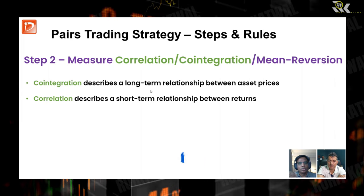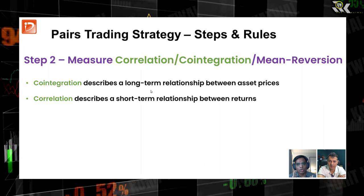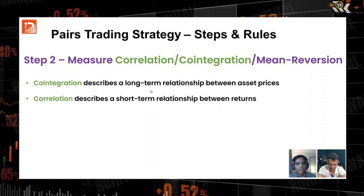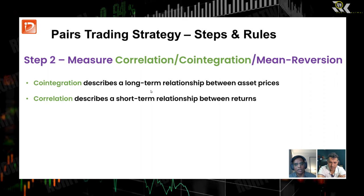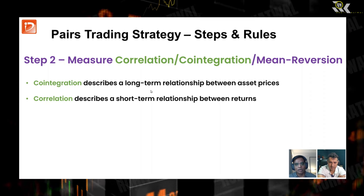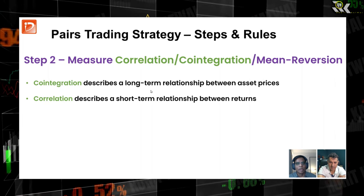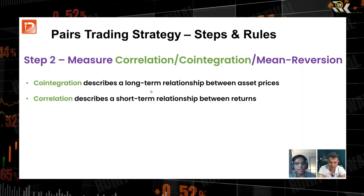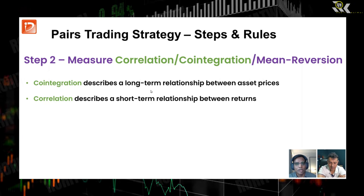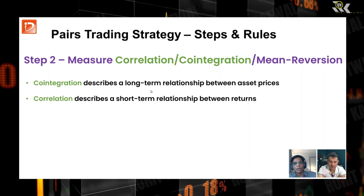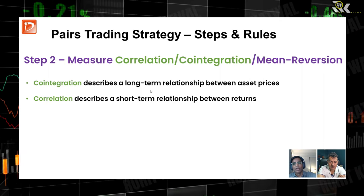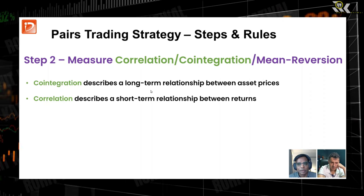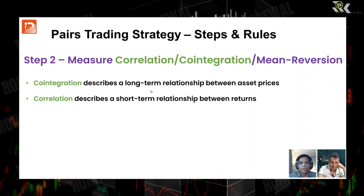In simplest terms: cointegration describes a long-term relationship between asset prices — measuring over the last year how tightly they are with respect to each other. Correlation describes a short-term relationship between returns, based on log returns. We have seen in the Excel sheet that an uncorrelated pair can become correlated later, so correlation describes that short-term relationship. That is why we look at both correlation and cointegration.